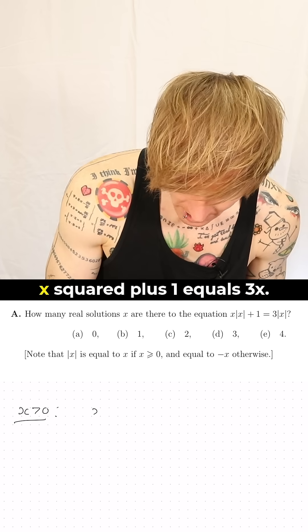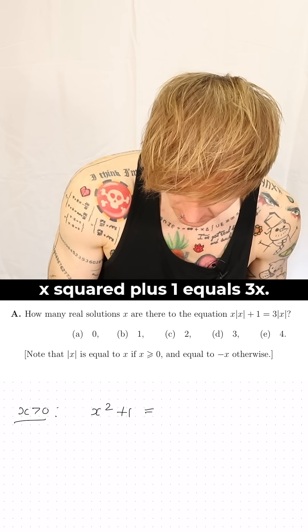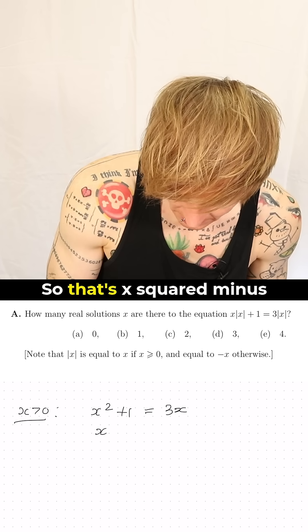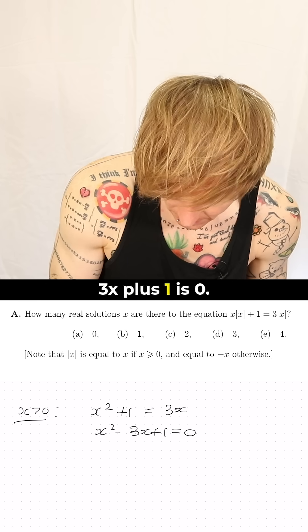So when x is positive, x squared plus 1 equals 3x, so that's x squared minus 3x plus 1 is 0.